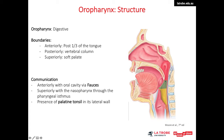The oropharynx has a digestive function and communicates with the oral cavity via an opening called the fauces. It also communicates with the nasopharynx via the pharyngeal isthmus. Its boundaries are: anteriorly the posterior one-third of the tongue, supplied by the glossopharyngeal nerve; posteriorly the vertebral column; superiorly the soft palate. The palatine tonsil is present on the lateral wall of the oropharynx.